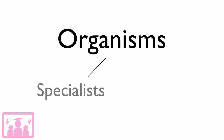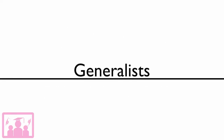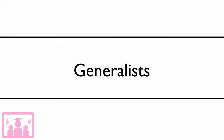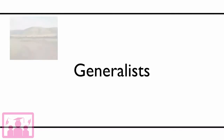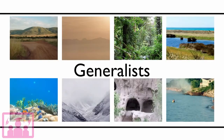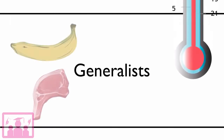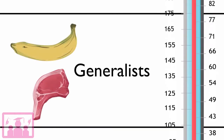Within an ecosystem, organisms can be categorised into two groups: specialists and generalists. Generalists are the species that can live in a wide range of environmental conditions and utilise a wide range of resources. For example, generalists may be able to tolerate a wide range of temperatures or have a varied diet.